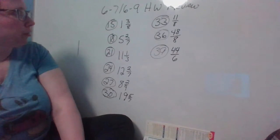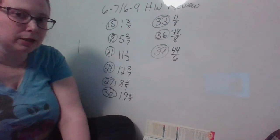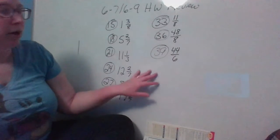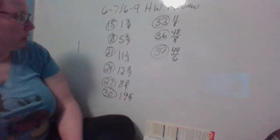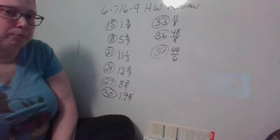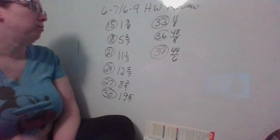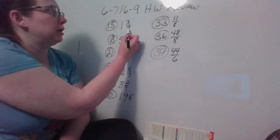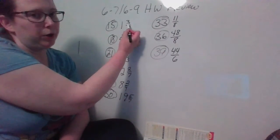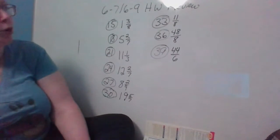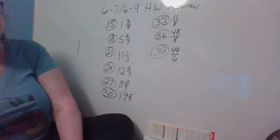Right, here we are with our homework review for 6-7 and 6-9. I have the problems from 6-7 up here. In this first column, we are changing these numbers from mixed numbers into improper fractions. To do that, we're taking our denominator times our whole number and then adding our numerator. That becomes our new numerator; our denominator remains the same.